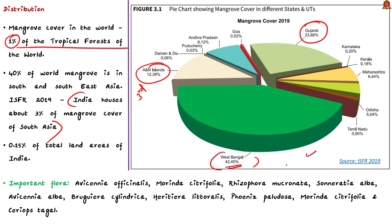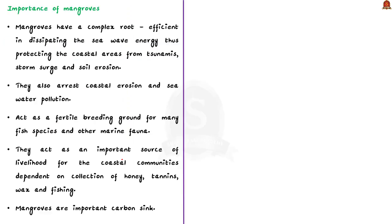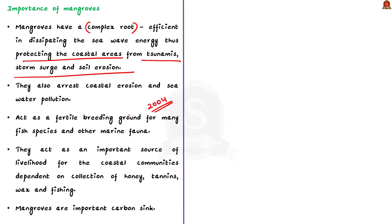Some important species of mangroves are displayed for your reference. Now let us see why mangroves are very important. Mangroves have a complex root system that protects coastal areas from tsunamis, storm surges and soil erosion — for example, mangroves played a huge role in protecting coastal areas during India's 2004 tsunami. Mangrove roots also slow down water flows and enhance sediment deposition, thereby arresting coastal erosion and seawater pollution.